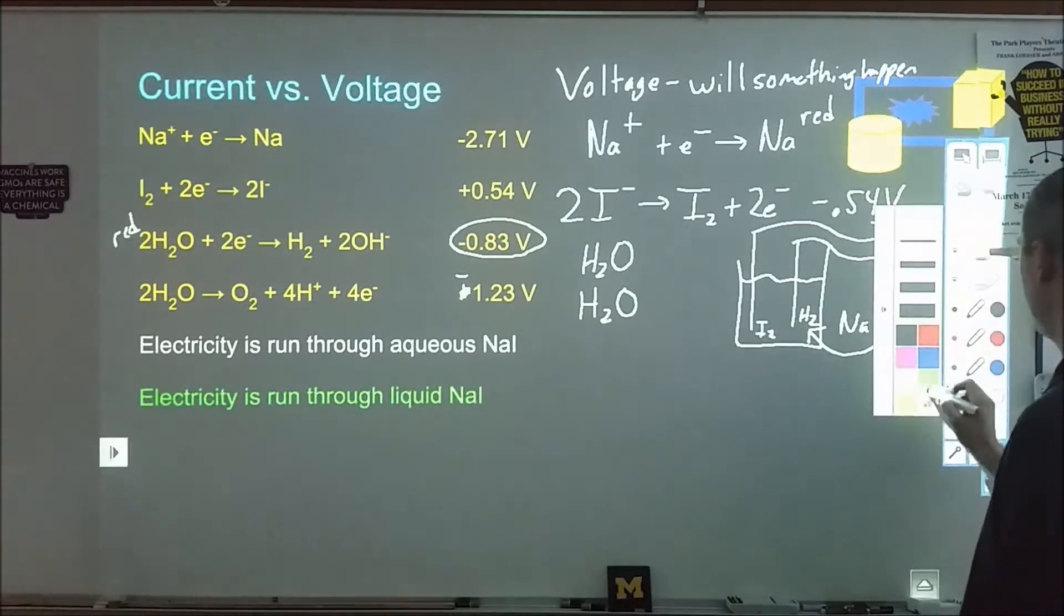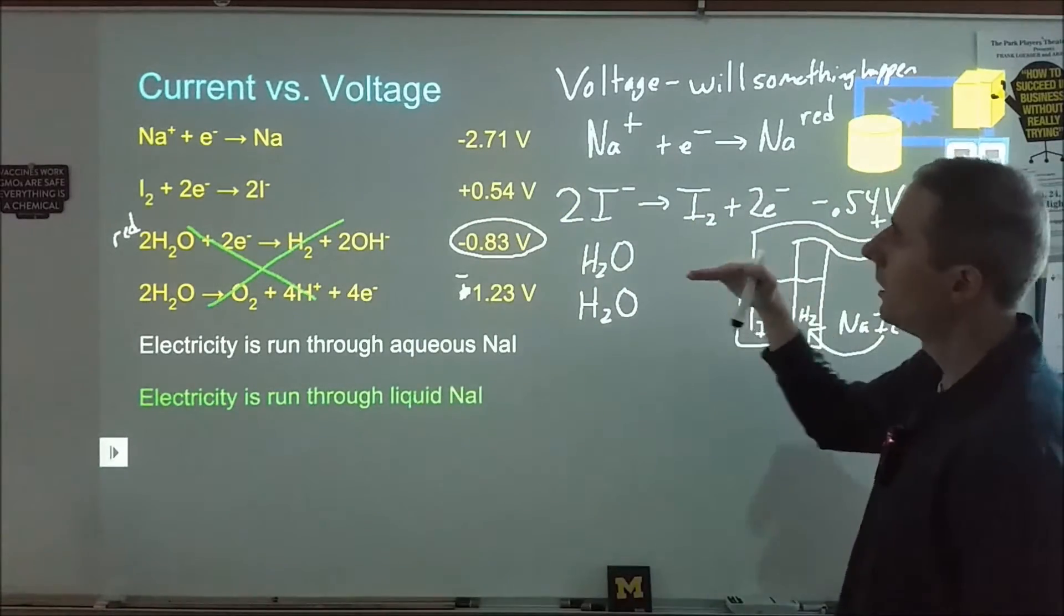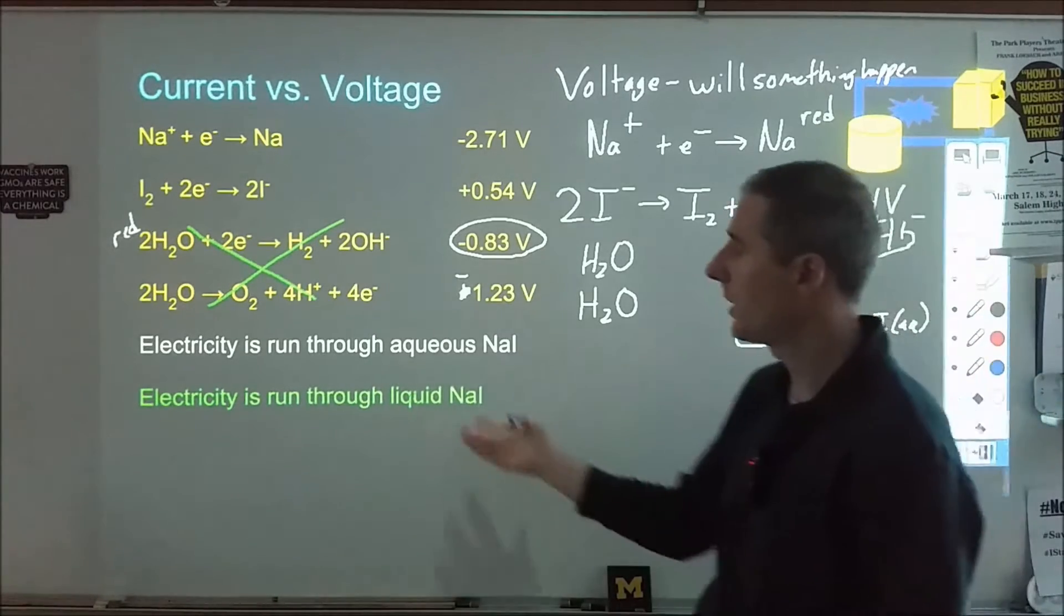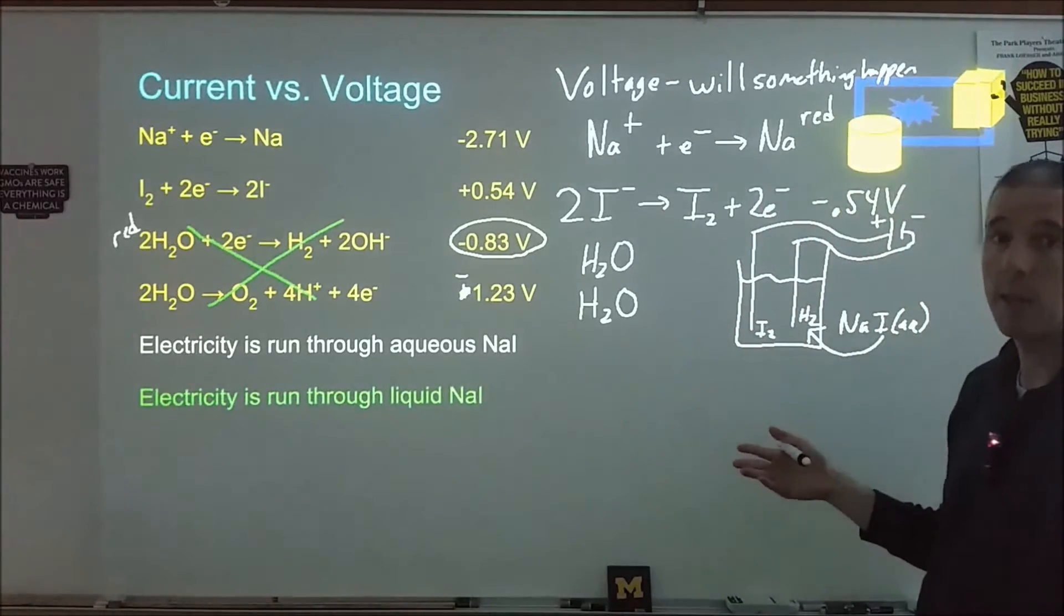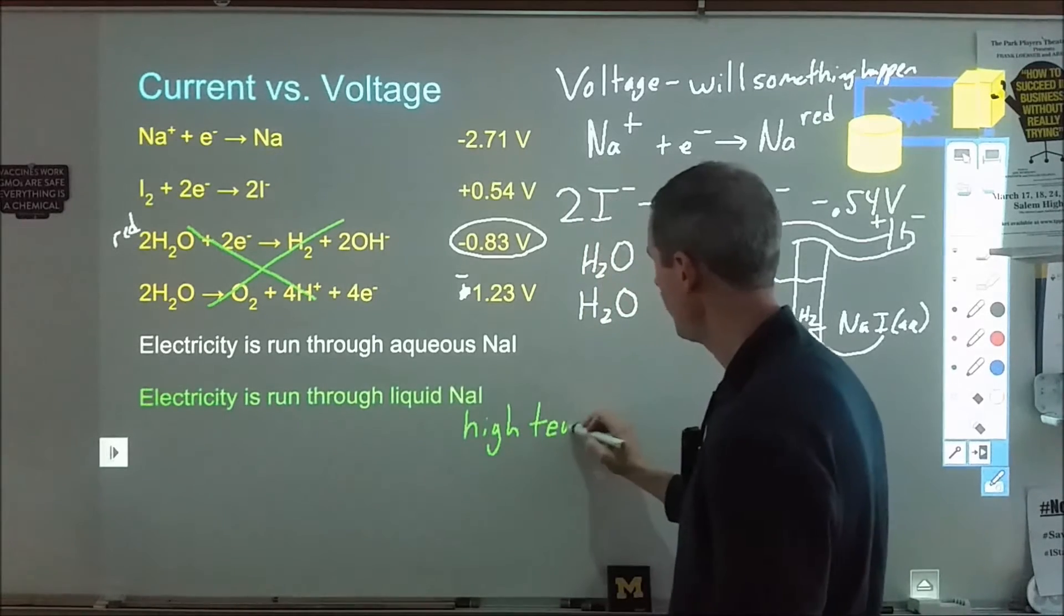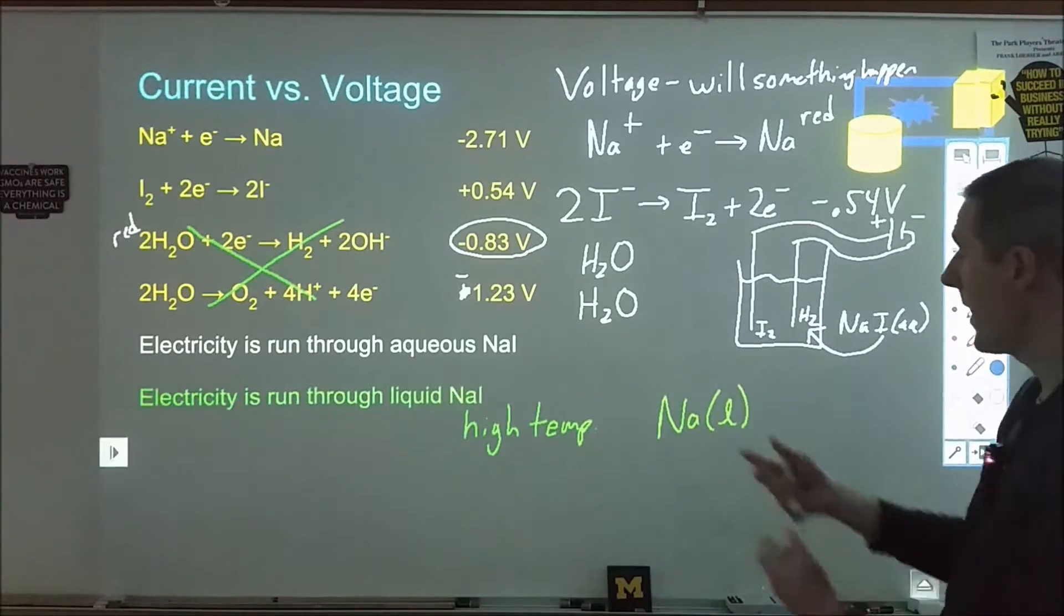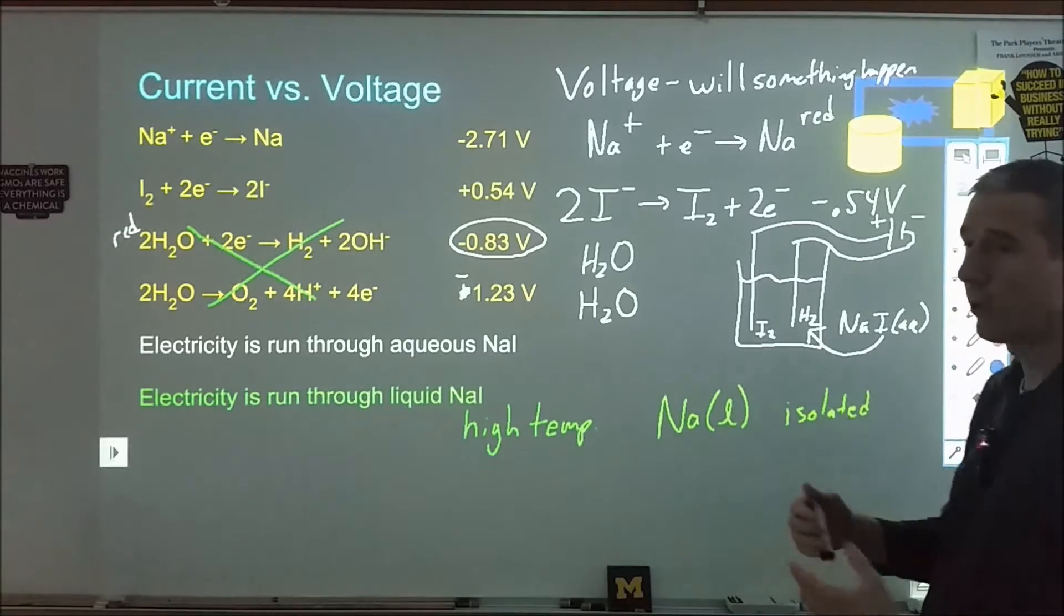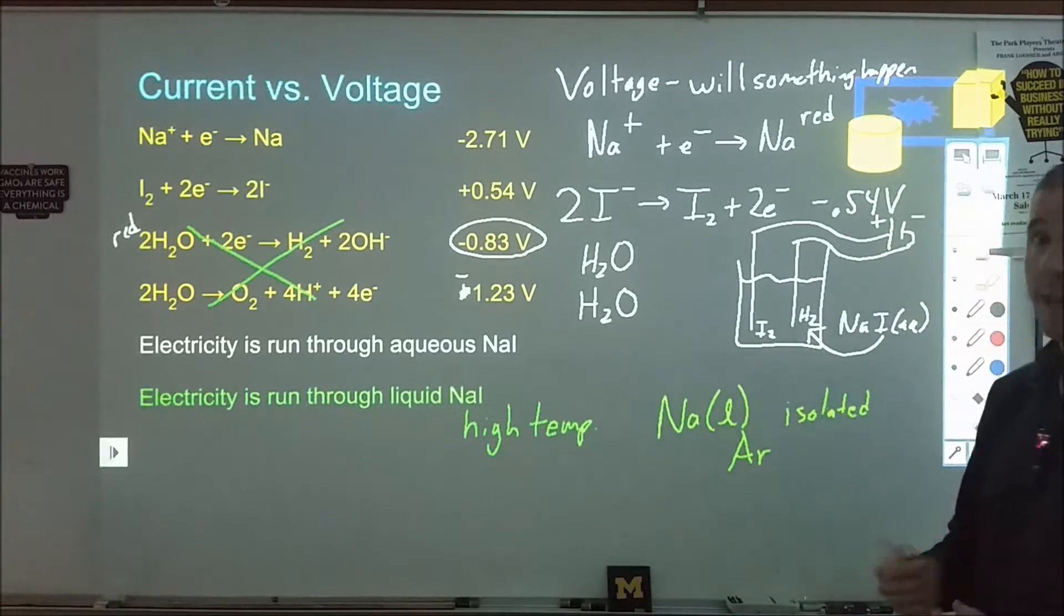If we run electricity through liquid sodium iodide, that changes the game. Because now I don't have these other two reactions to look at. Now I just have these two. I need to supply enough voltage for this to occur and for this to occur. But once I reach that point, the reaction will happen. If I put up a one volt battery, nothing's really going to happen. But if I put up a nine volt battery, then all of a sudden I'm going to form sodium metal at one end and iodine solid at the other end. In order for that to happen, this would have to be molten at high temperature. Something to consider is if you're producing sodium metal, which will probably be a liquid at high temperature, then you're looking at an extremely reactive substance forming at a really high temperature. So that needs to be isolated. If you have that in just air and you're forming hot sodium liquid, that's going to start to burn. You need to form that in a protected thing, like maybe put it under argon atmosphere so that it's not actually reacting when that occurs.